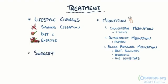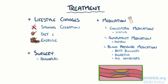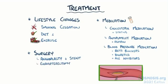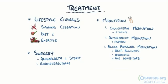With severe atherosclerosis, angioplasty can be used to open a blocked artery with a balloon, followed by the placement of a stent to keep the artery open. A surgery called an endarterectomy, often done with the carotid arteries, can also be done to remove fatty deposits. Finally, a blood vessel can be grafted in and used to bypass or go around a blocked artery.